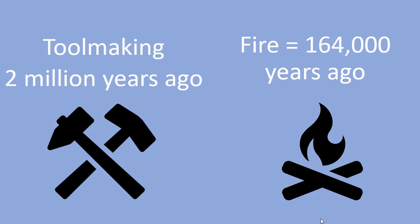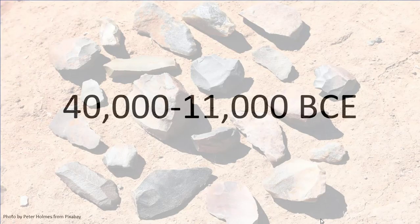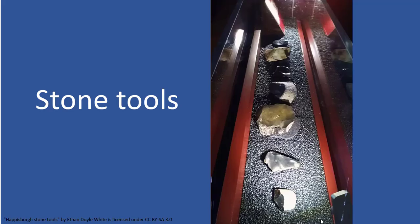Tool-making hominids — the group of creatures including humans from which modern humans have evolved — emerged roughly 2 million years ago. The tools they created were made out of stone, hence the term Stone Age for this period of human history. Also, around 164,000 years ago, humans developed the capacity to control fire. If we fast forward a bit, we see new developments happening in the period from 40,000 to 11,000 BCE, when stone tools were still being made but the craftsmanship and skill had increased remarkably.